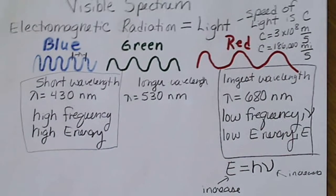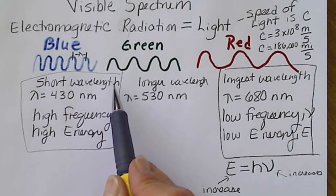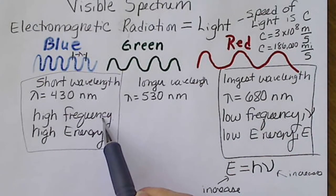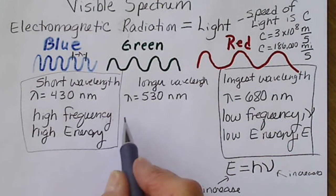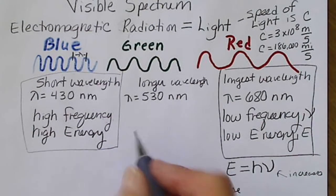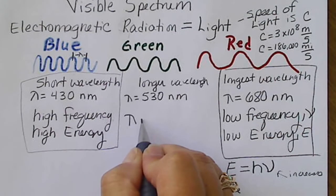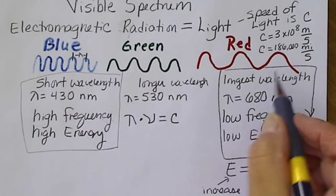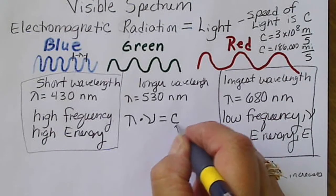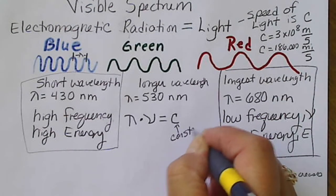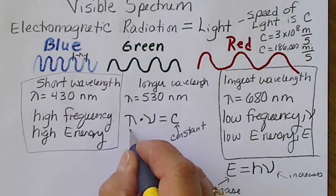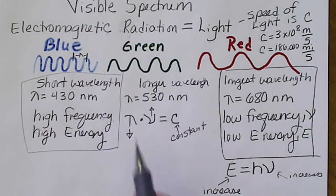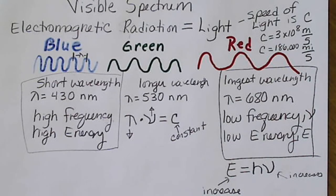There's another mathematical relationship that explains why short wavelength means high frequency. The wavelength times the frequency is always equal to C, the speed of light. This value is constant and can't change. So if the wavelength goes down, the frequency has to go up because these two values always multiply together to give us the speed of light.